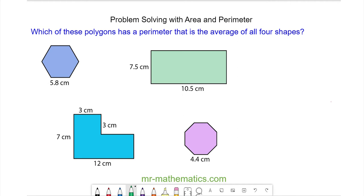In this question, we are told that one of these polygons has a perimeter which is the average of all four. To solve this problem, we'll need to work out the perimeter of every shape.